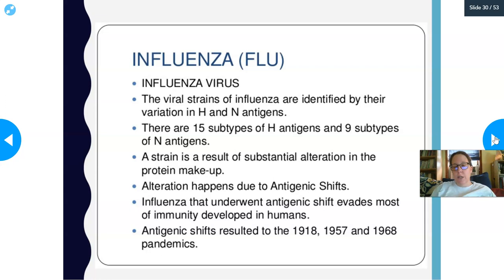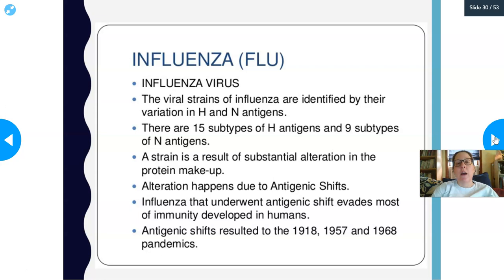Major antigenic shifts in 1918, 1957, and 1968 caused worldwide pandemics because no one had immunity to the new forms. RNA viruses are more prone to antigenic shifts because single-stranded RNA is easier to alter than double-stranded DNA. This is also why COVID-19 — a coronavirus discovered in 2019 — is concerning: it is an RNA enveloped virus similar to the flu, with the same potential for changing and looking like a new virus every few years.